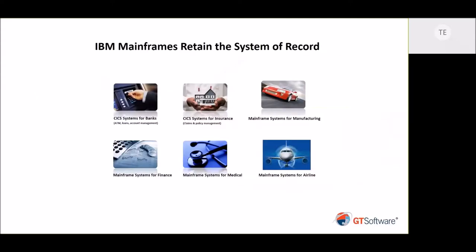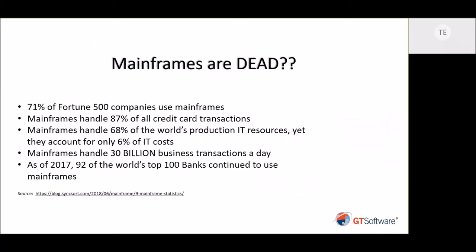As we all know, the mainframe is the system of record for all different types of applications — manufacturing, finance, banks especially, and some airlines. We'll be talking about them today, particularly the banks, insurance, and the airlines. Everybody says mainframes are dead. However, a high percentage of Fortune 500 companies use their mainframes. If anybody has ever used a credit card, there's an 87% chance it went through a mainframe, as well as the 300 billion business transactions a day. As of two years ago, it was documented that 92 of the world's 100 banks will continue to use their mainframe.